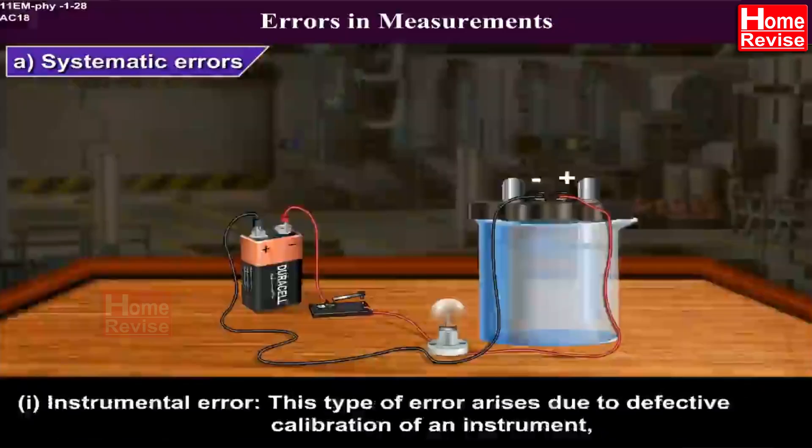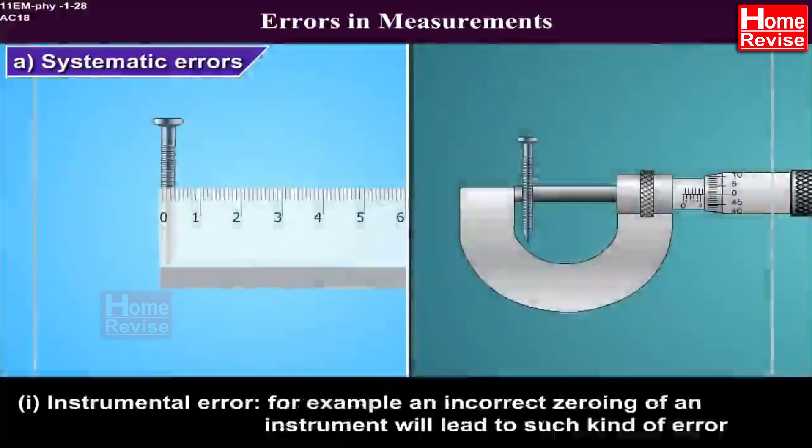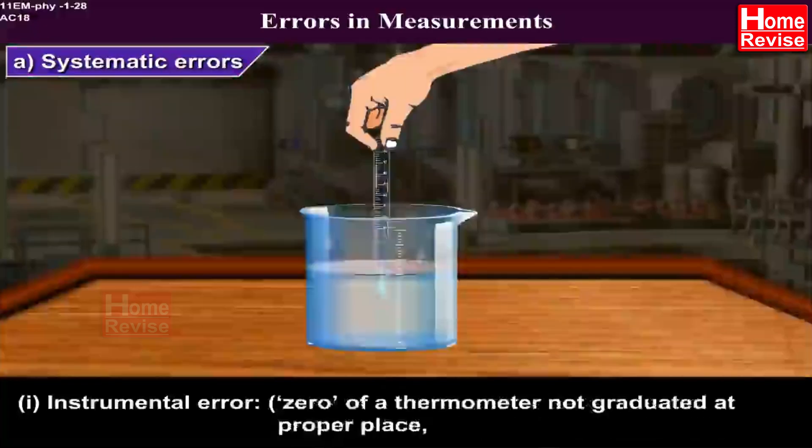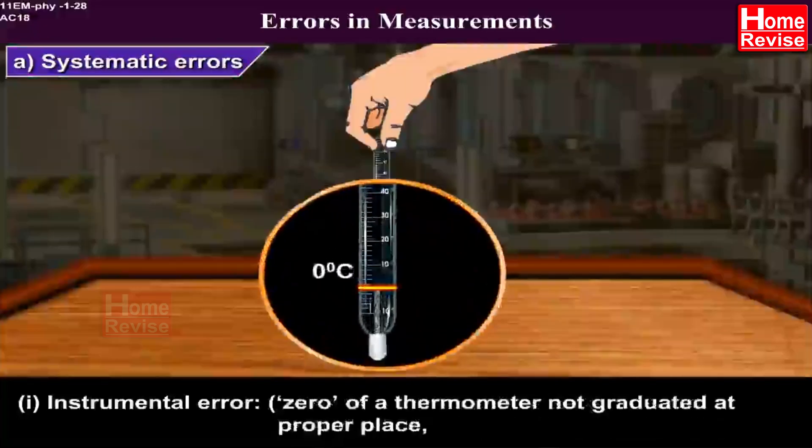instrumental error. This type of error arises due to defective calibration of an instrument. For example, an incorrect zeroing of an instrument will lead to such kind of error. Zero of a thermometer not graduated at proper place.